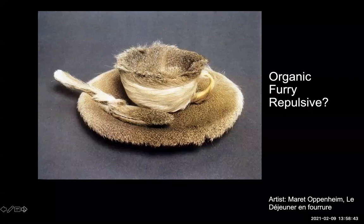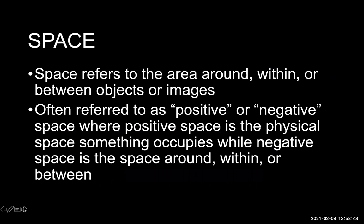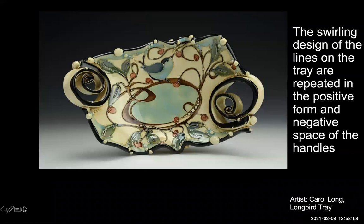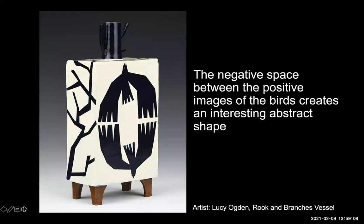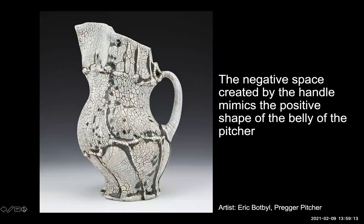Space refers to the area around, within, or between objects or images, often referred to as positive or negative space. Positive space is the physical space something occupies, while negative space is the space around, within, or between objects. The swirling design of the lines on the tray is repeated in the positive form in the negative space of the handles. In this piece, the negative space between the positive images of the birds creates an interesting abstract shape. In this piece, the negative space created by the handle mimics the positive shape of the belly of the pitcher.